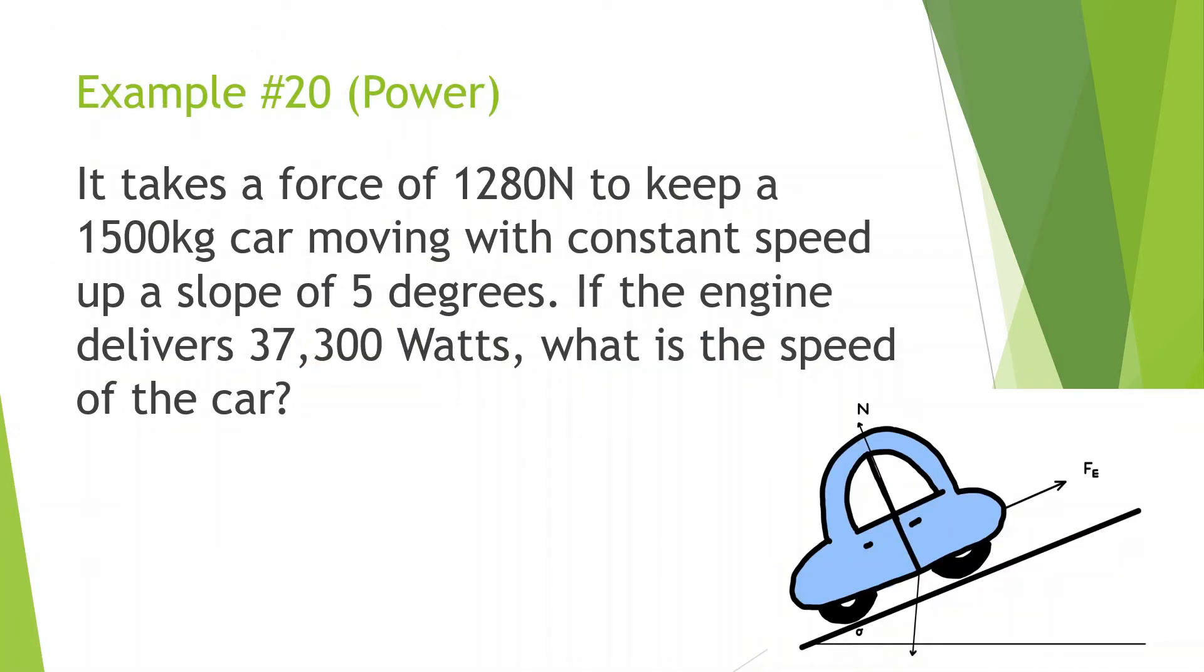It takes a force of 1280 newtons to keep a 1500 kilogram car moving with a constant speed up a slope of five degrees. Let's just write some things. This is five degrees. This is 1280 newtons to keep moving constant speed. If the engine delivers 37,300 watts, what is the speed of the car?